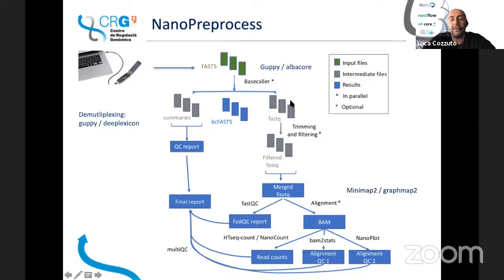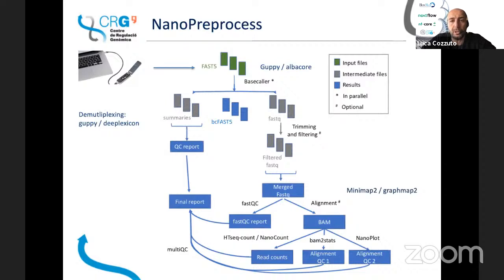The FASTQ files can be trimmed and filtered, and they are run in parallel, so it's quite fast. The FASTQ files are then aligned to a reference — if you provide one — using minimap2 or graphmap; you can choose which tool at the parameter step. You don't need to change any part of the pipeline for that. You can also feed the parameters of each step directly from the parameter section. This information is then used for the alignment, further QC is run, and the final report is shown to you.